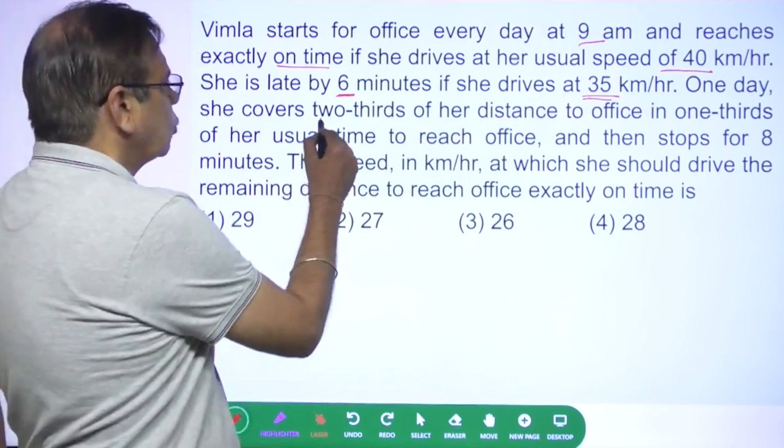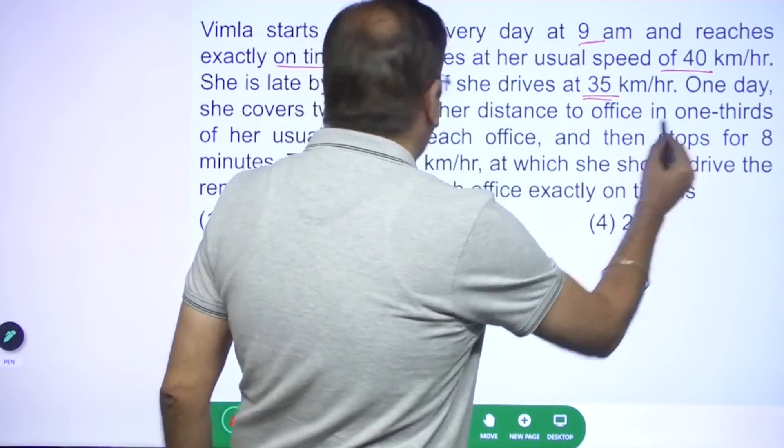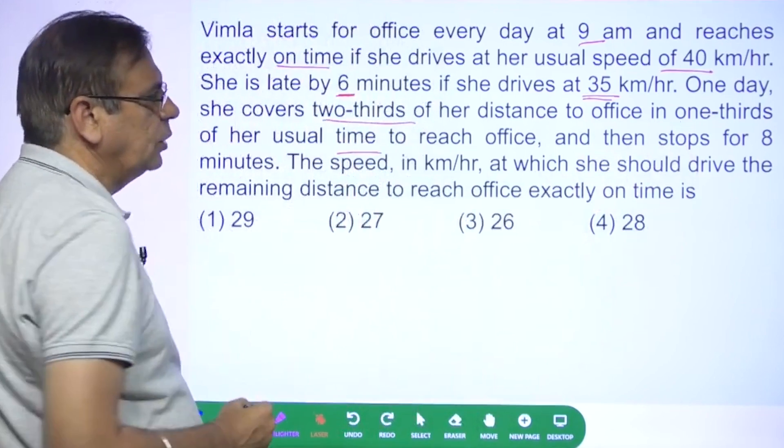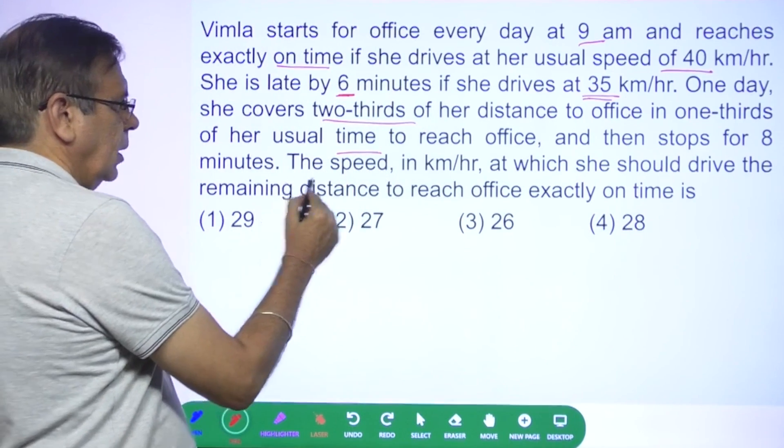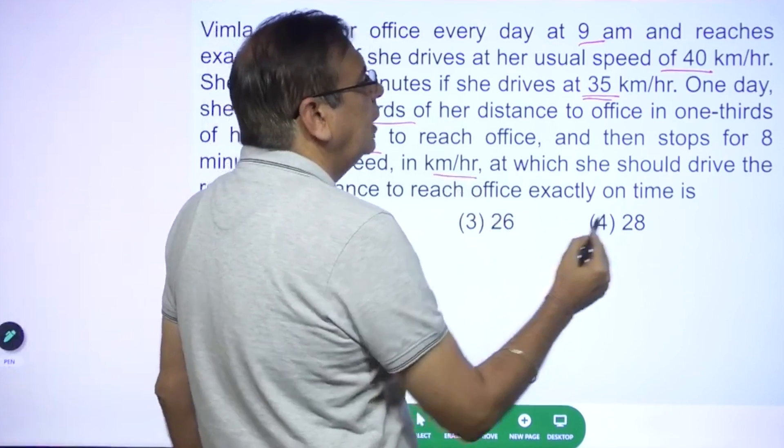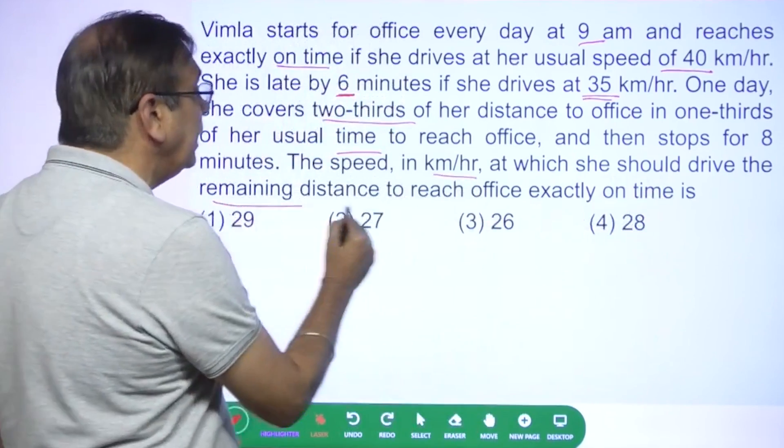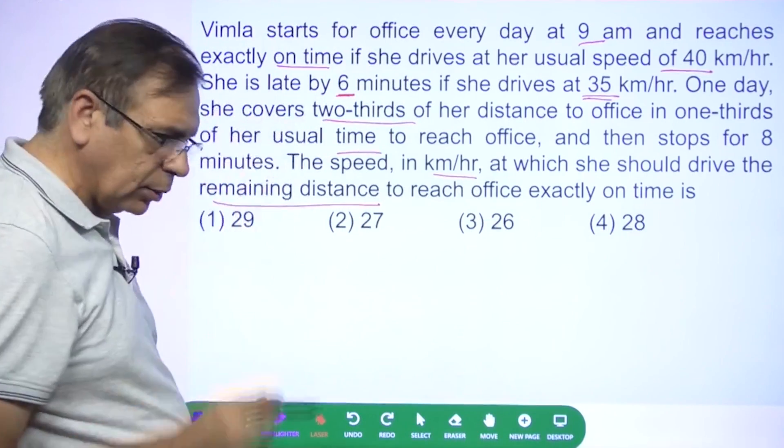One day she covers two-thirds of her distance to office in one-third of her usual time to reach the office and then stops for 8 minutes. The speed in kilometers per hour which she should drive the remaining distance to reach office exactly on time.